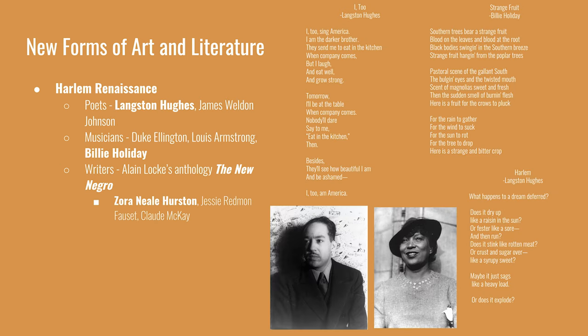The Harlem Renaissance came about as a result of the Great Migration. African Americans from all over the country converged in urban neighborhoods like Harlem in New York City and influenced each other to produce new works defining the black experience in the early 20th century. Langston Hughes was one of the most famous voices of the movement, writing fiction, poetry, and essays — some hopeful, others more despondent.